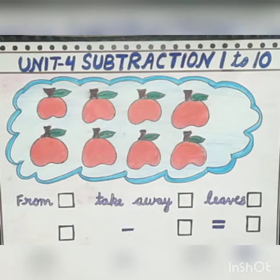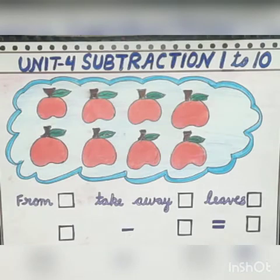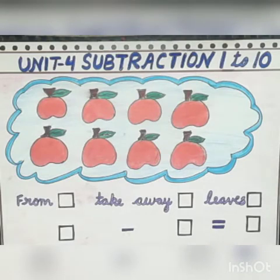In the last video we learnt about the addition of numbers 1 to 10. Now let's understand what we mean by subtraction. In the picture you can see that there are apples.